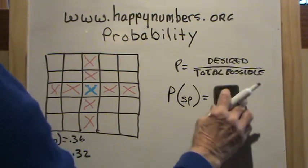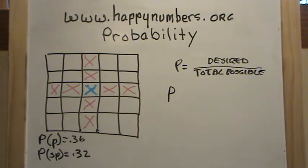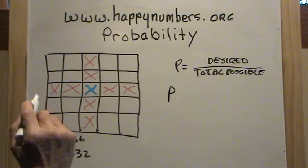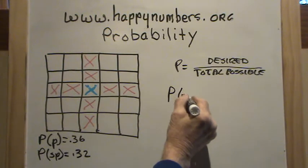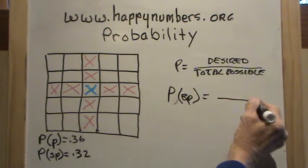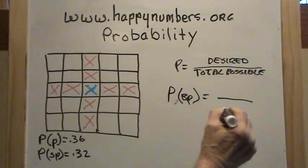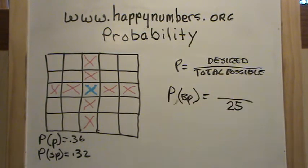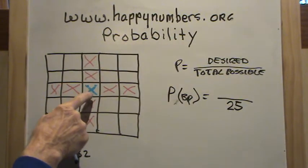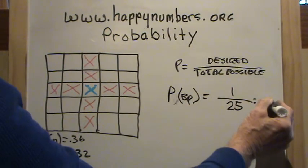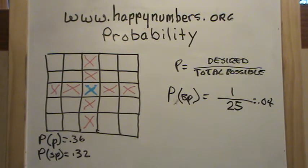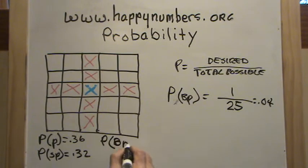What is the probability of winning a big prize, which means just landing on that one blue box? The probability of a big prize: total possible outcomes is still 25. The desired outcome is only one box. So 25 divided into one — I worked that out — and that's four hundredths. So the probability of getting a big prize is 0.04.